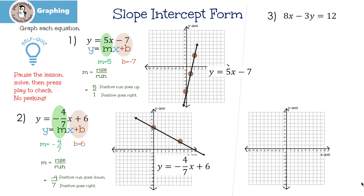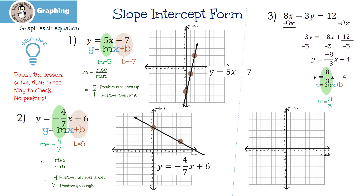Let's look at our last one. We have to solve for y first, so I'm going to subtract 8x from both sides. That leaves me with negative 3y equals negative 8x plus 12. Next, I need to divide everything by negative 3. That leaves me with y equals negative 8 over negative 3 x minus 4. A negative divided by a negative is a positive, so my equation in slope-intercept form is y equals 8-thirds x minus 4. My slope is 8 over 3 and my y-intercept is negative 4. Here's my negative 4 — going up 8: 1, 2, 3, 4, 5, 6, 7, 8, and then 3: 1, 2, 3. Our next step is to draw the line and then label it.